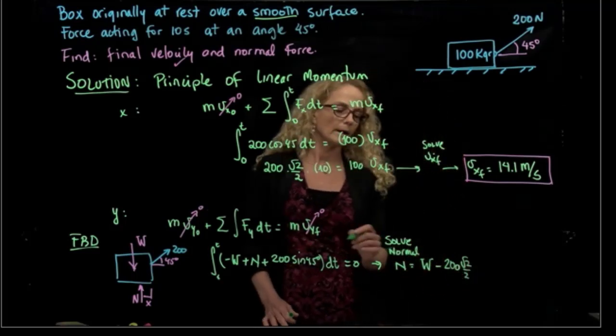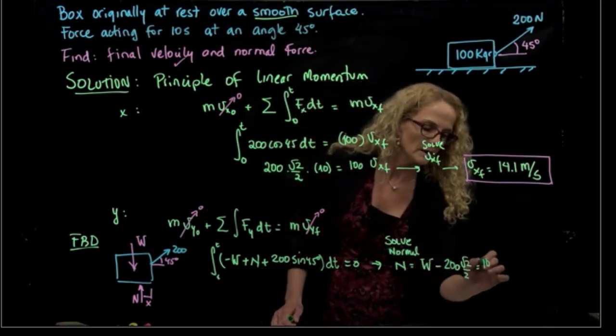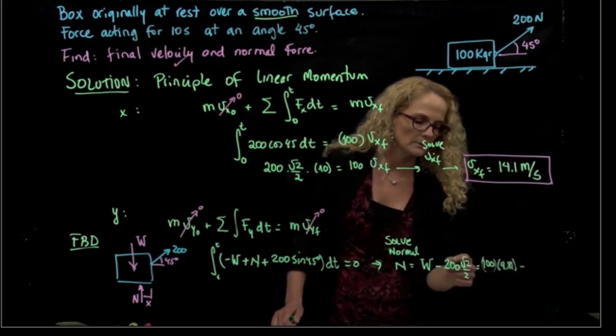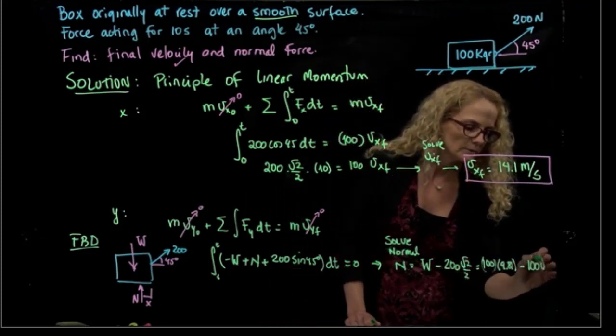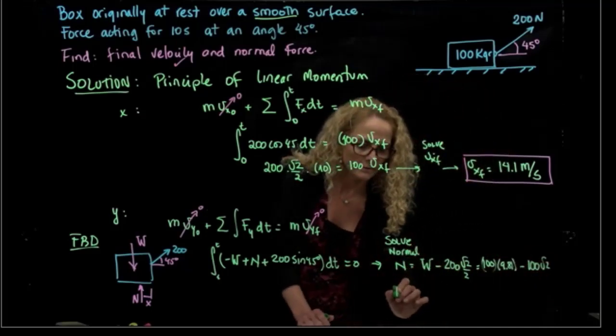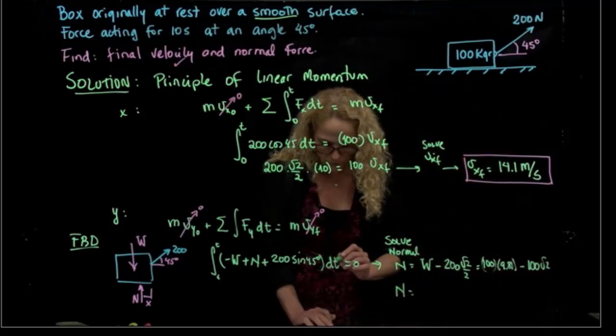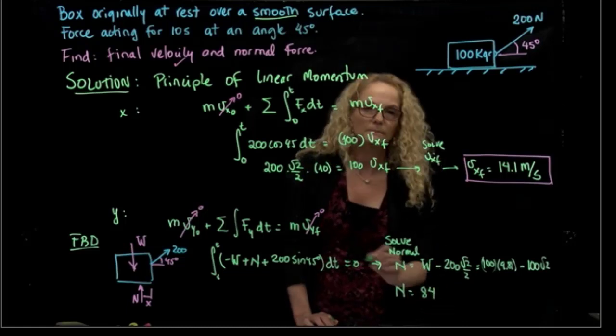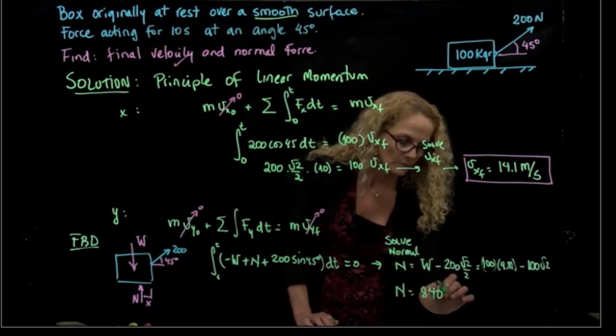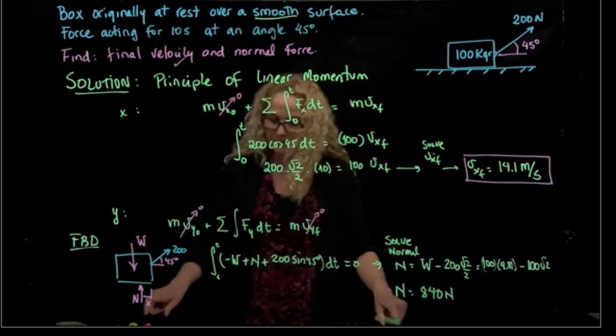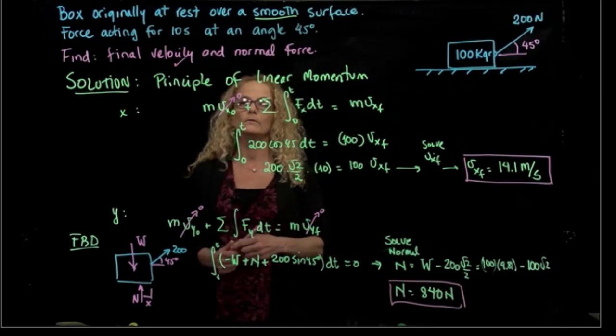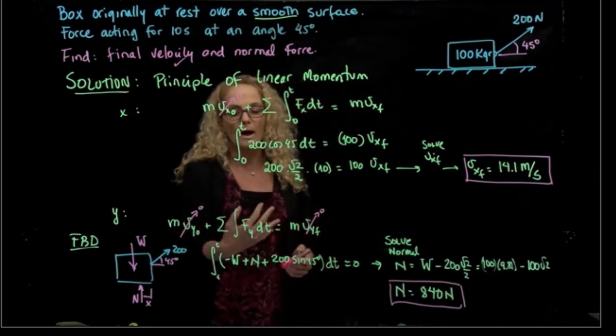And the weight, you remember, that is 100 times gravity minus 100 square root of 2. So finally, the normal is equals to 840 newtons.